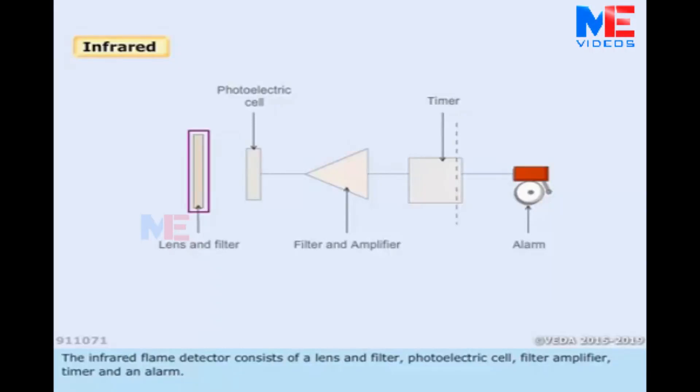The infrared flame detector consists of a lens and filter, photoelectric cell, filter amplifier, timer, and an alarm.